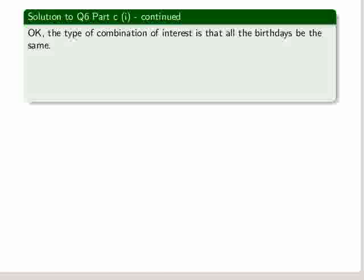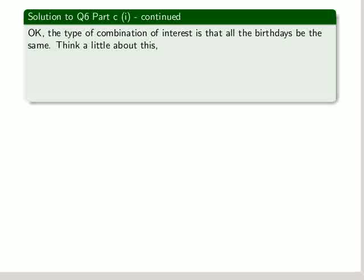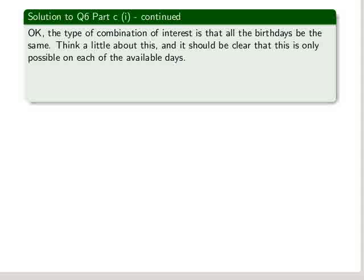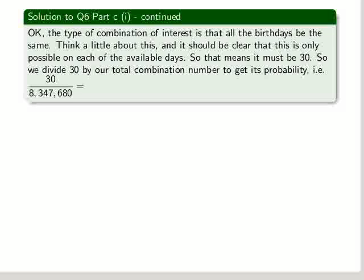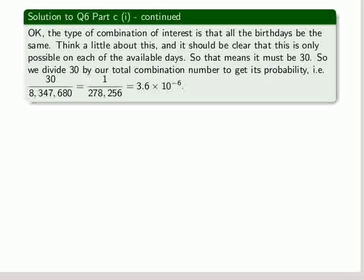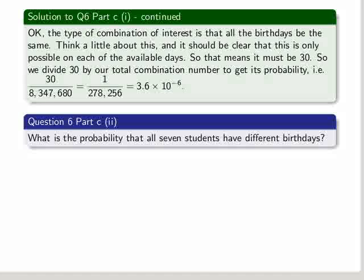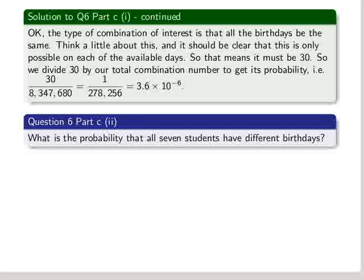Okay, the type of combination of interest in this first section is that all the birthdays be the same. So all the birthdays have to coincide. Think a little about this. It should be clear that this is only possible on each of the available days. So it means that it must be 30. So we divide 30 by our total combination number to get the probability of this case. So you get 30 divided by the 8 plus something million. So that simplifies and we get 3.6 times 10 to the minus 6. Okay, so that's the probability fairly low. Very low that they all should coincide on the same day, 7 people in June.